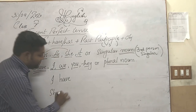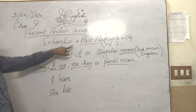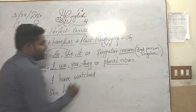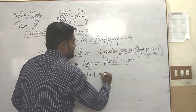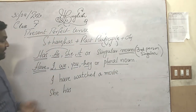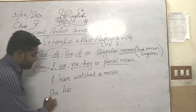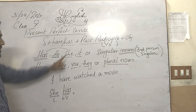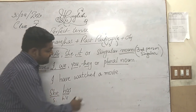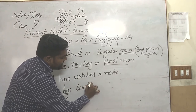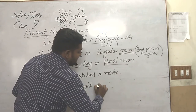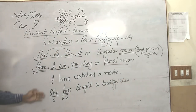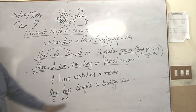With 'she' as the subject, we use 'has'. Now let's make a complete sentence. For example: 'I have watched a movie.' Second example: 'She has' — according to the subject, we use the helping verb — now use the third form of the verb, which is past participle. 'She has bought a beautiful dress.' As you can see, I have used 'she has' with the third form of the verb and with the object.